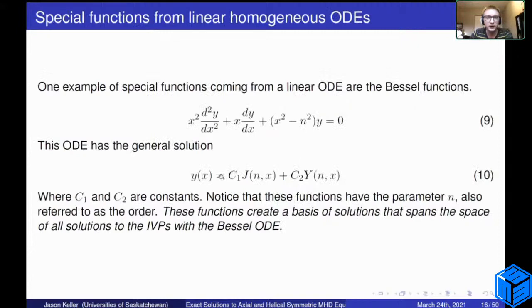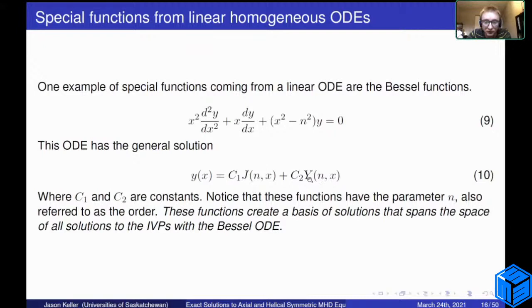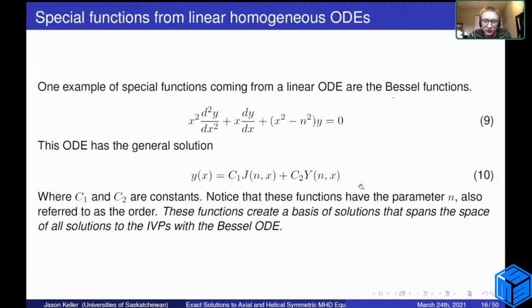Before going further, I want to briefly discuss some special functions. Some of the solutions I find are in terms of special functions for inner ODEs. One example is the Bessel ODE, which has a general solution where J and Y are Bessel functions with parameter n. There are going to be a lot of solutions with parameters — not just the argument, but also the parameter. Solutions to homogeneous linear ordinary differential equations create a basis of solutions that spans the space of all solutions to any initial value problem.